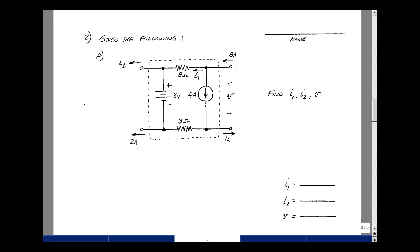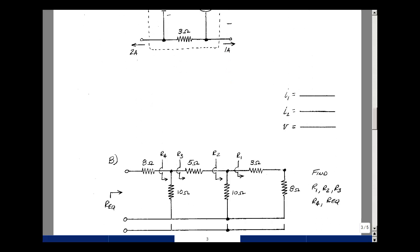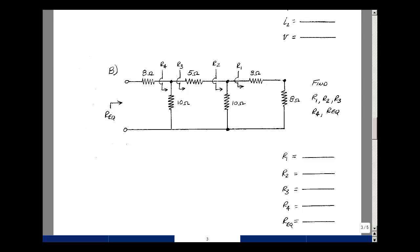Problem number two, can you find the current I1, the current I2, and the voltage V for this circuit? Question 2b, can you find the resistance looking back into the circuit for R1, looking back for R2, R3, R4, and then eventually R-equivalent?